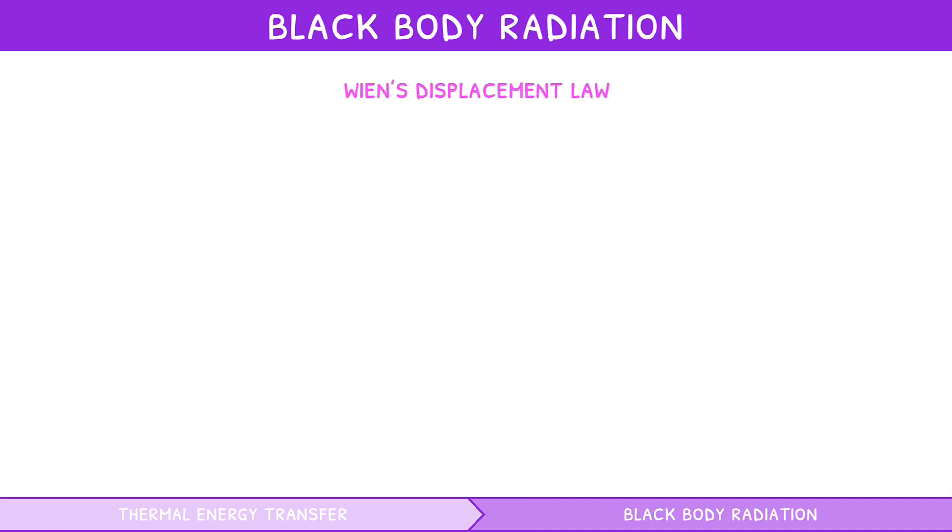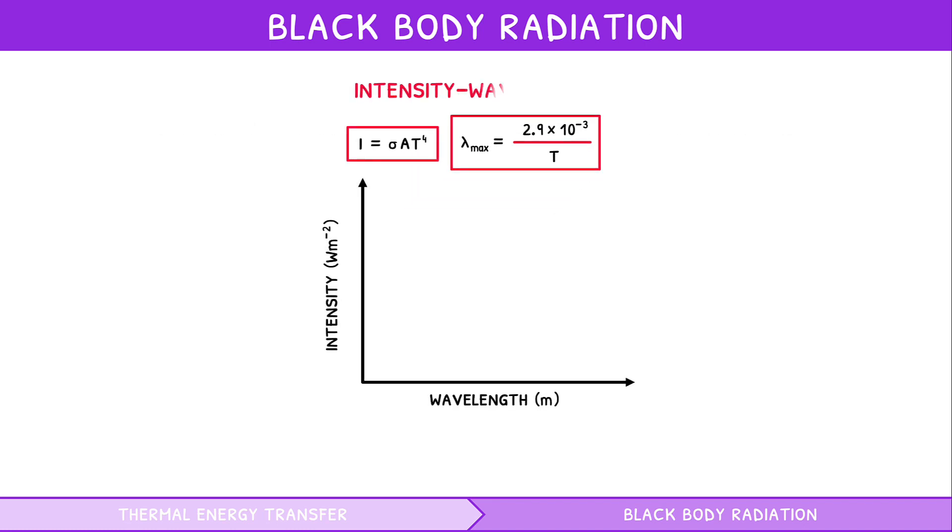Wien's displacement law states that the wavelength at the maximum intensity is inversely proportional to the temperature. The formula for this is wavelength at maximum intensity equals 2.9 times 10 to the power of minus 3 divided by temperature. The IB expects you to be able to use these two laws to analyze intensity-wavelength graphs of radiation at different temperatures. Let's cover the key points.